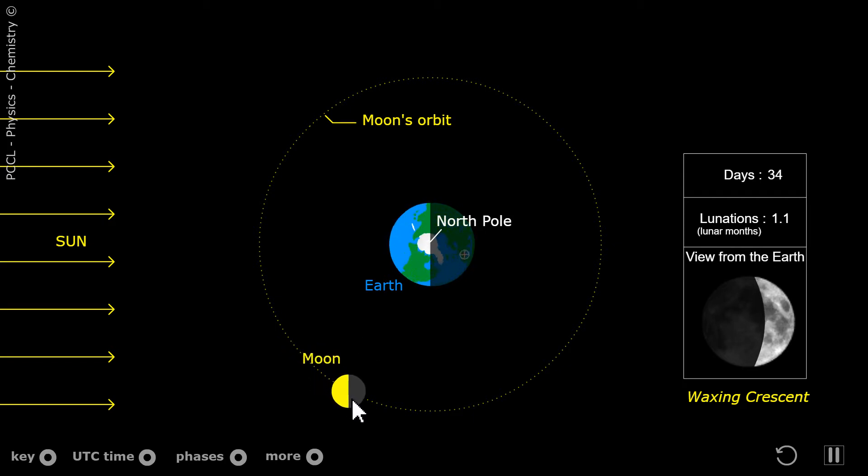The moon, which revolves around the Earth along this path, the sun on the left.